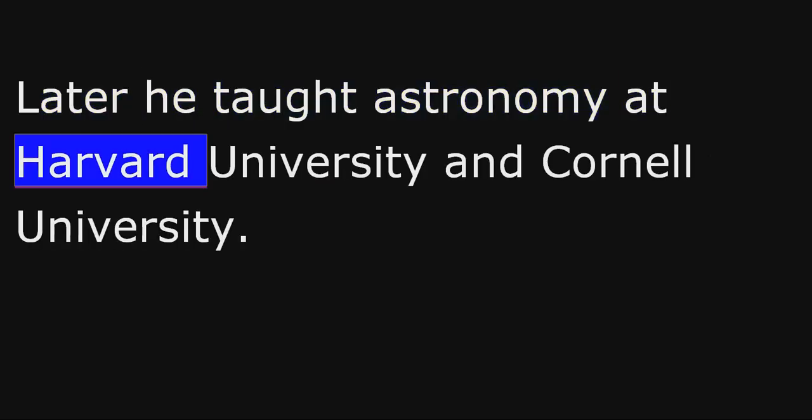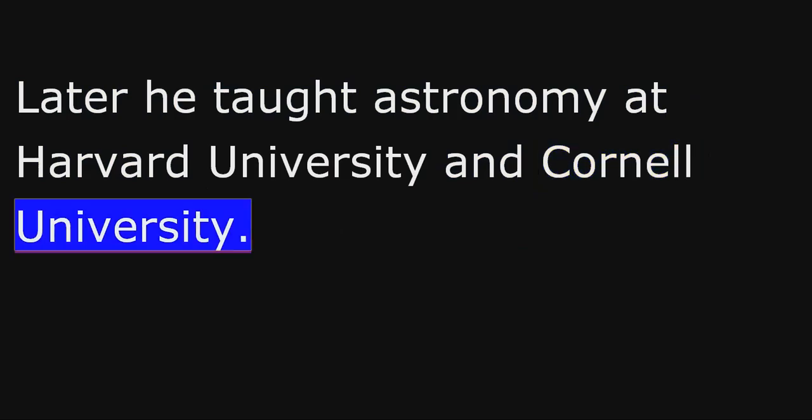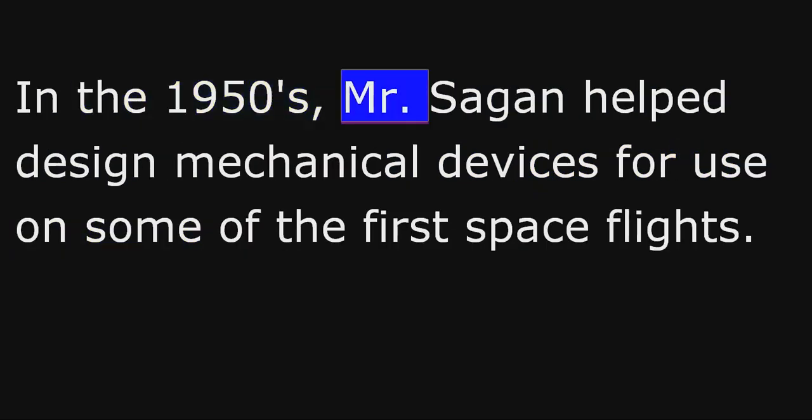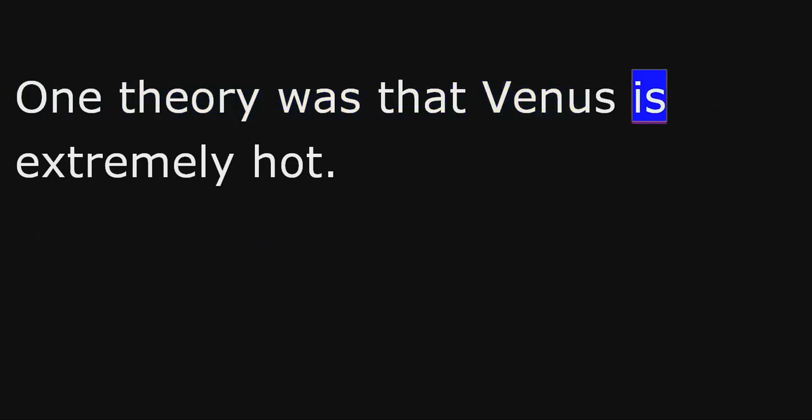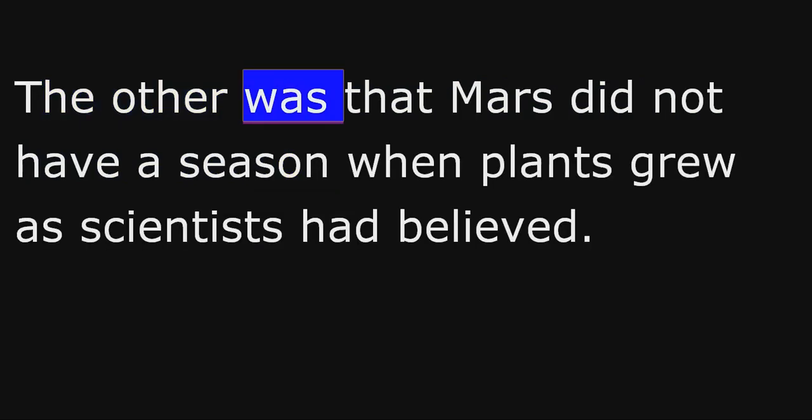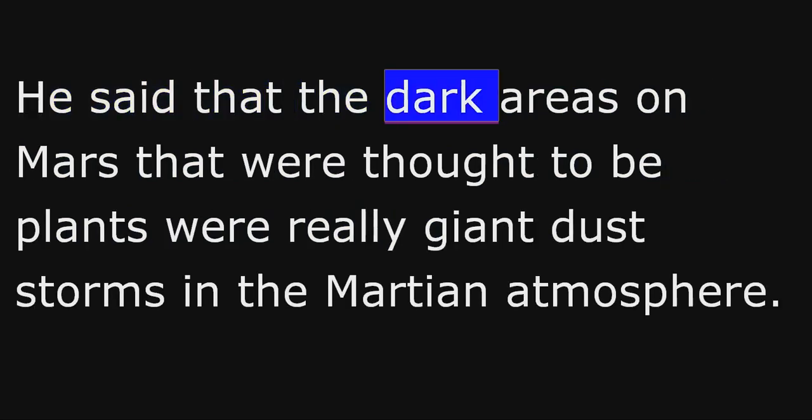Later, he taught astronomy at Harvard University and Cornell University. In the 1950s, Mr. Sagan helped design mechanical devices for use on some of the first spaceflights. He also published two important scientific theories that were later confirmed by spaceflights. One theory was that Venus is extremely hot. The other was that Mars did not have a season when plants grew, as scientists had believed. He said that the dark areas on Mars that were thought to be plants were really giant dust storms in the Martian atmosphere.